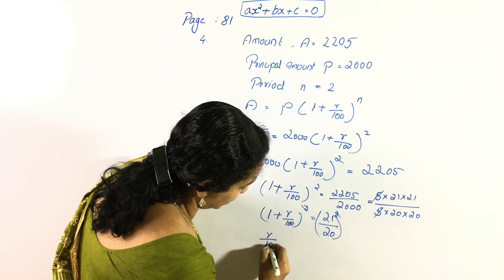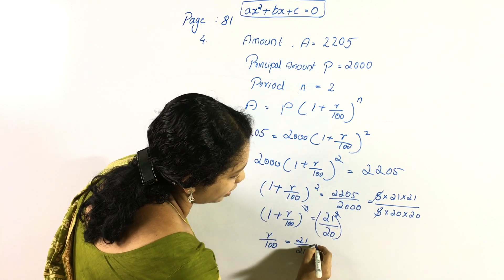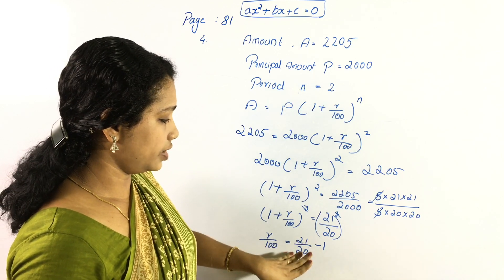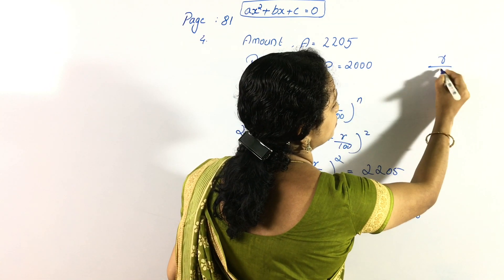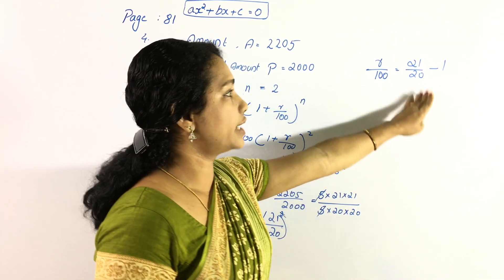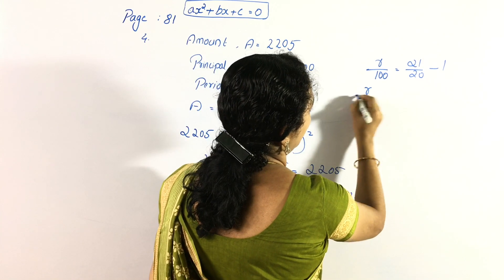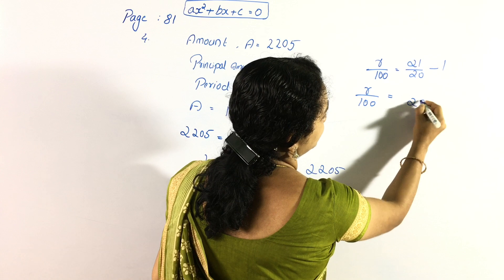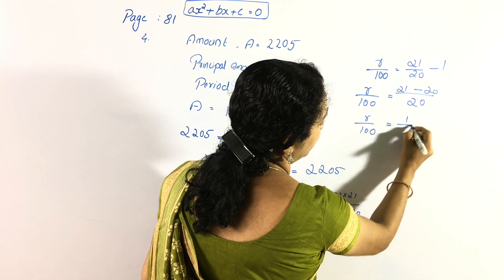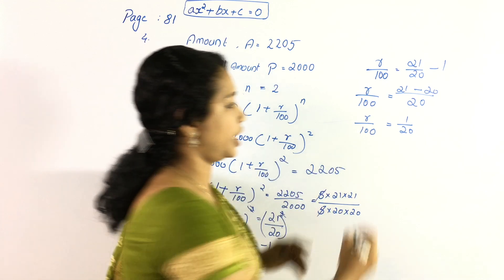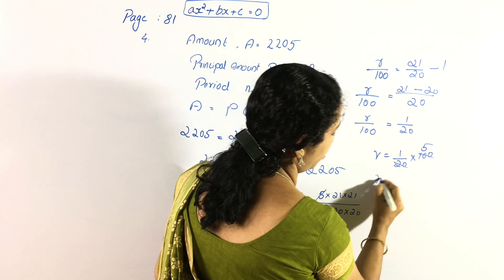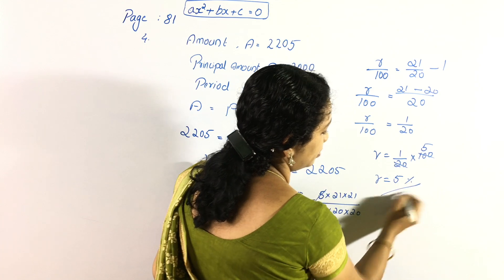Using LCM of 20: r/100 = (21 - 20)/20 = 1/20. Therefore r = (1/20) × 100 = 5. So the rate of interest is 5%.